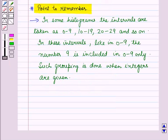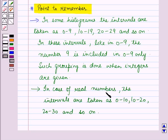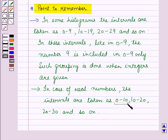An important point to remember: in some histograms the intervals are taken as 0 to 9, 10 to 19, and so on. In these intervals, the number 9 is included in the interval 0 to 9, and this type of grouping is done when only integers are given, since integers cannot take values like 9.4 or 9.5. In the case of real numbers, we take intervals as 0 to 10, 10 to 20, and so on, where numbers like 9.5 and 9.6 fall in the interval containing all numbers greater than or equal to 0 and less than 10.